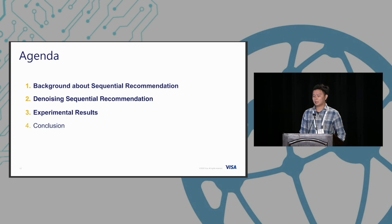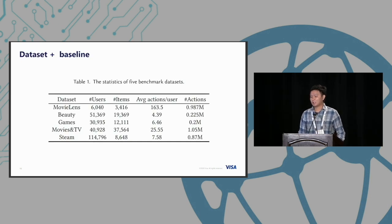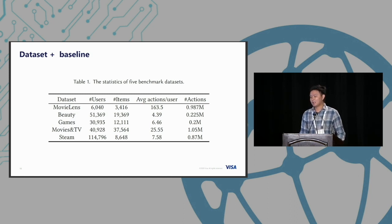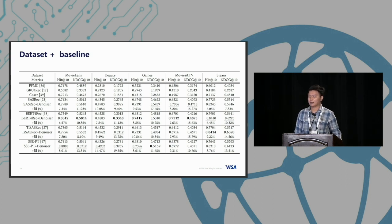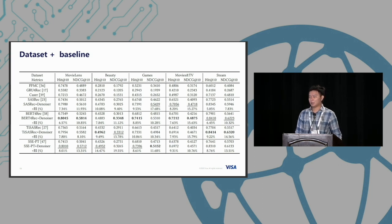We introduce our experiments using five standard benchmarks: MovieLens, Beauty, Games, Amazon Movies, and Steam. We compare against four transformer baselines including SASRec and BERT4Rec, as well as a transformer that considers temporal signals. We use HitRate and NDCG to measure performance, sampling 100 items along with the one ground-truth item for ranking.